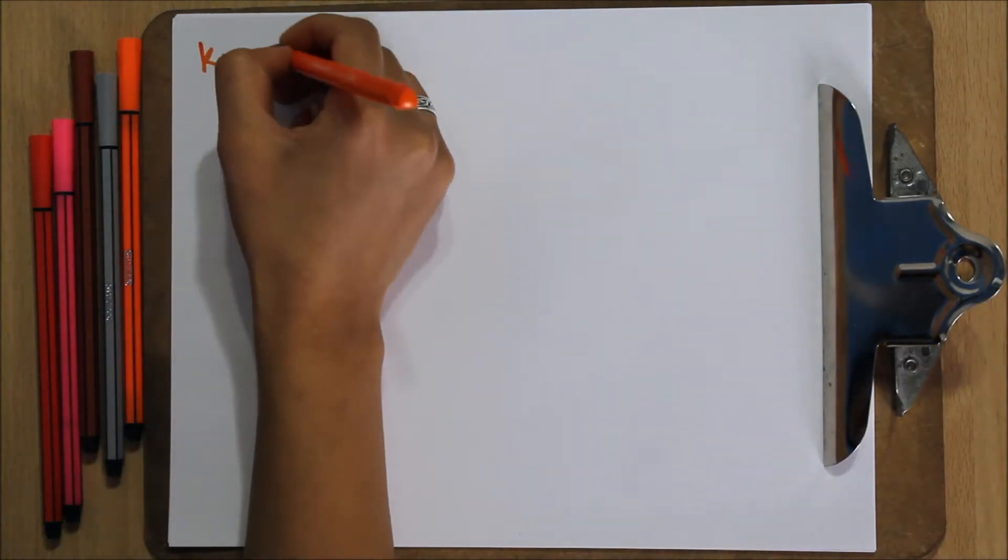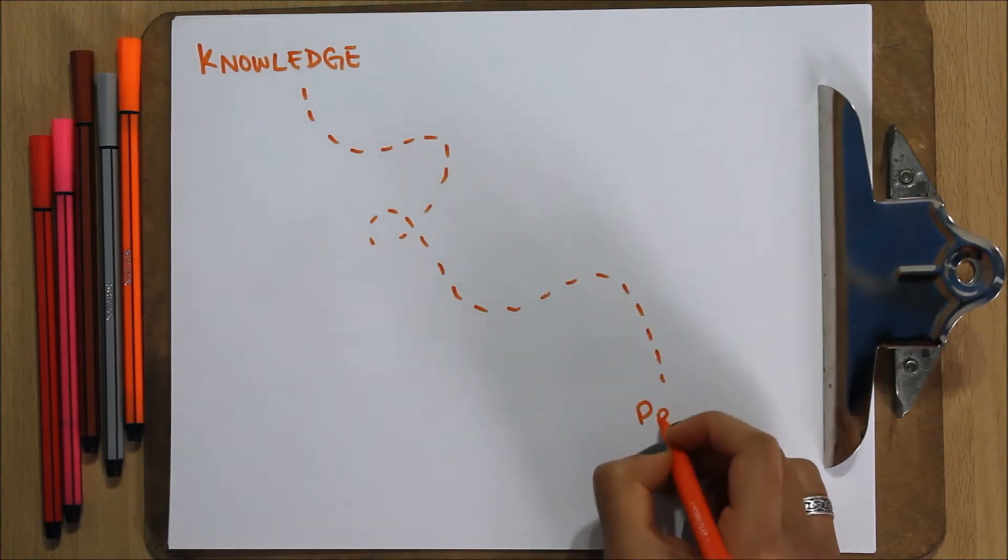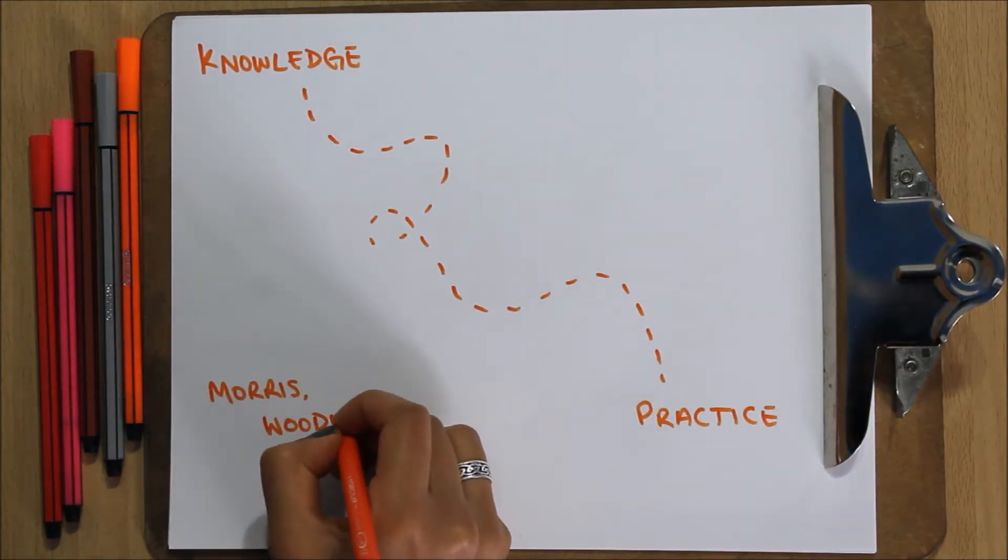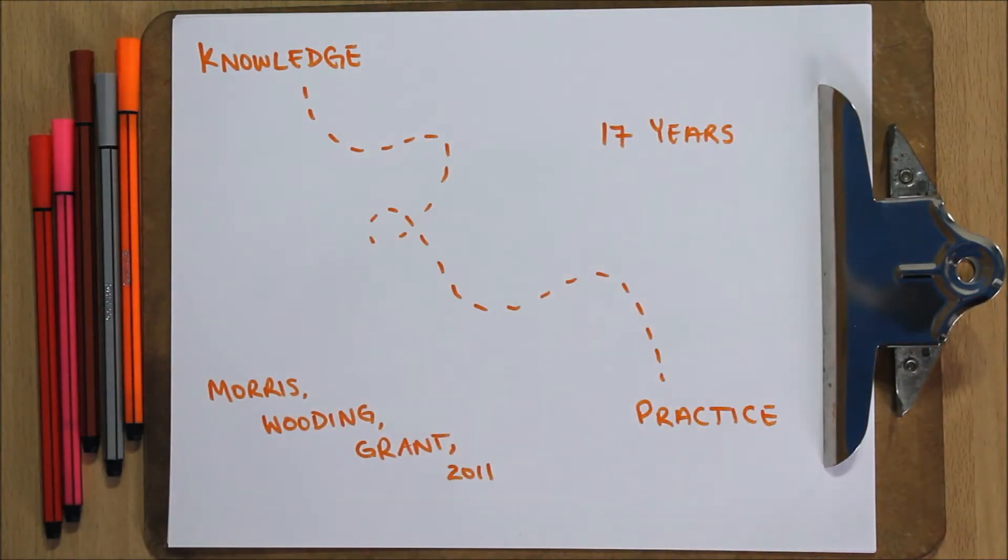Scientific literature can take a long time to translate into practice. In fact, upon reviewing available research on time lags in healthcare, Morris, Wooding and Grant estimated in 2011 that it takes an average of 17 years for research to actually translate into healthcare practices.